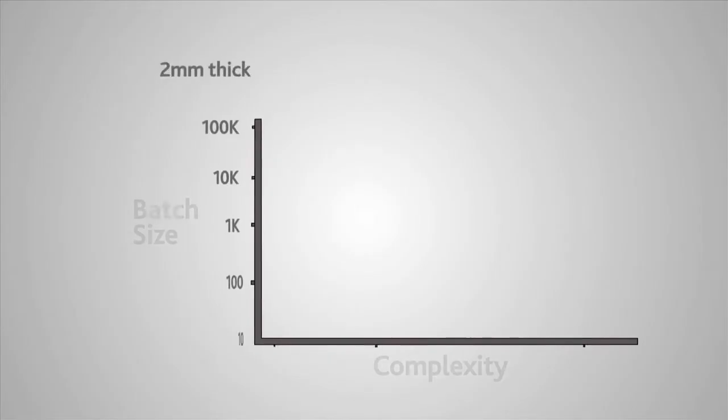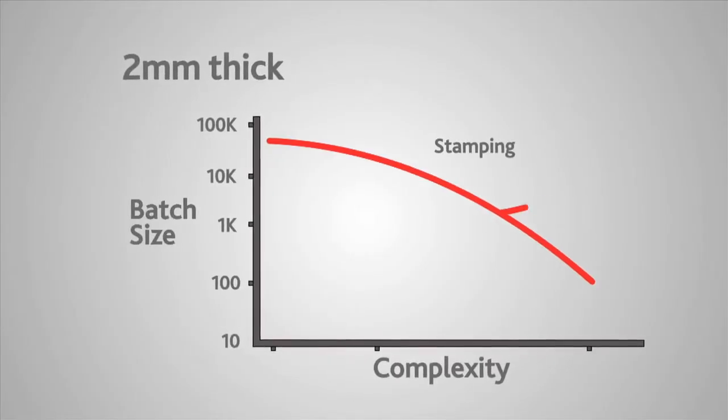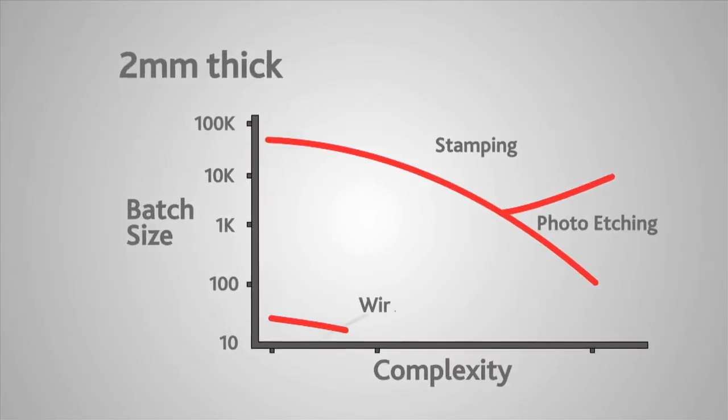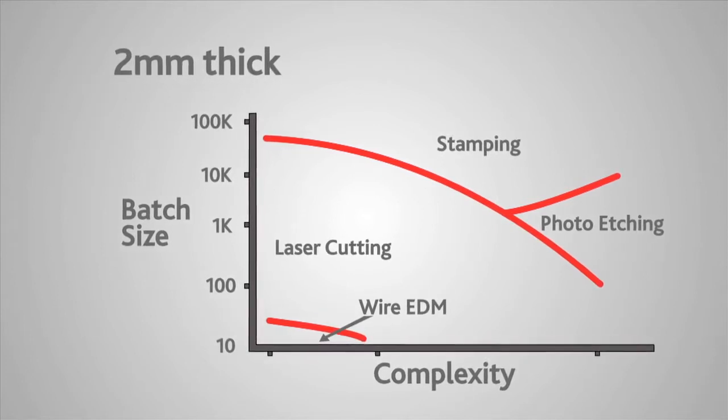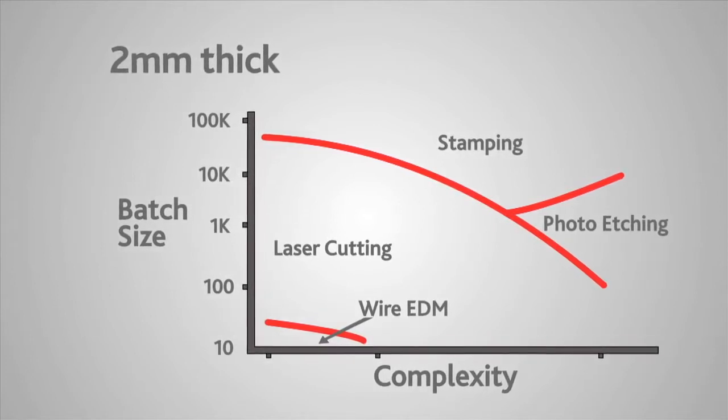If we look at a two millimeter thick simple component, it becomes less economic to make small quantities by wire electrode discharge machining, and photochemical machining is pushed out to a certain extent by laser cutting because it takes a long time to etch through very thick material.